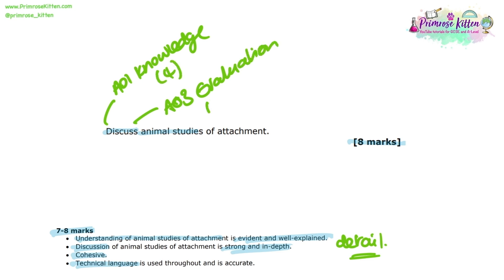The question is asking about animal studies, and you should be aware that there are two animal studies of attachment named on the specification. These are Lorenz and Harlow, so these should be the two that first come to mind. It's worth noting that because both of these studies are named on the specification, you could be asked a direct question about either or both of these studies.